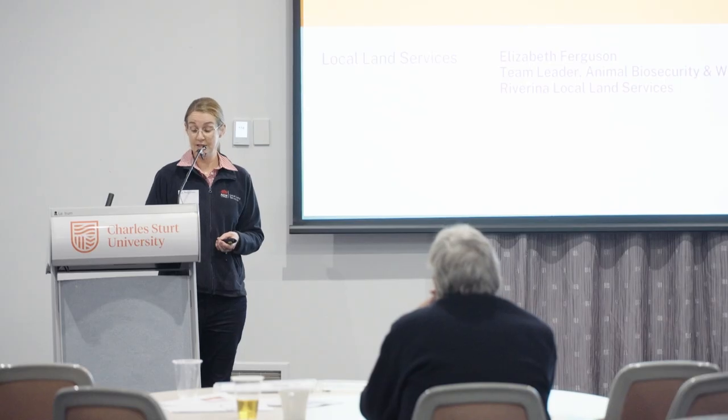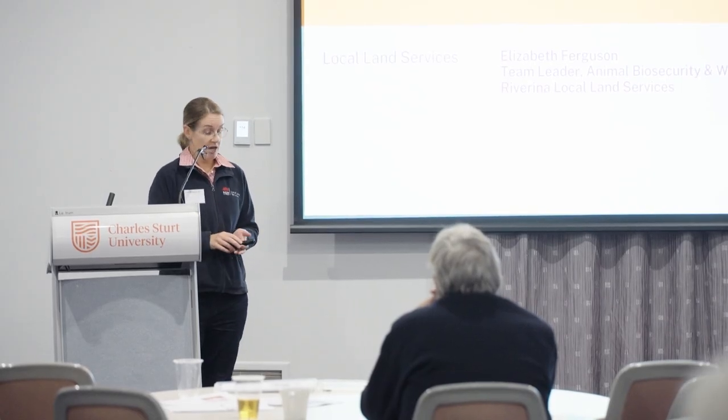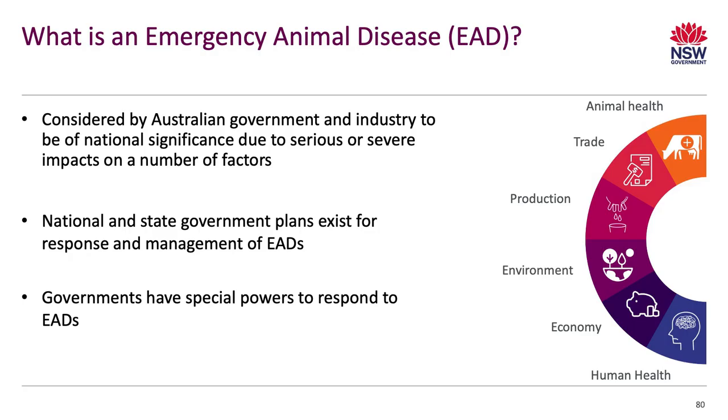So this next part, we're going to be talking about what we call the five priority EADs. I've worked in government now for two and a half years and I realise that you need a little book with all the acronyms in it. EAD stands for Emergency Animal Diseases.